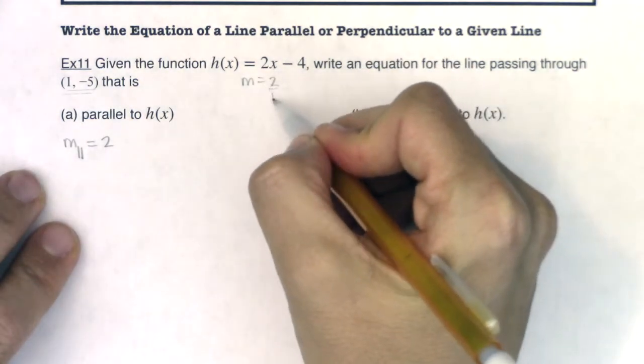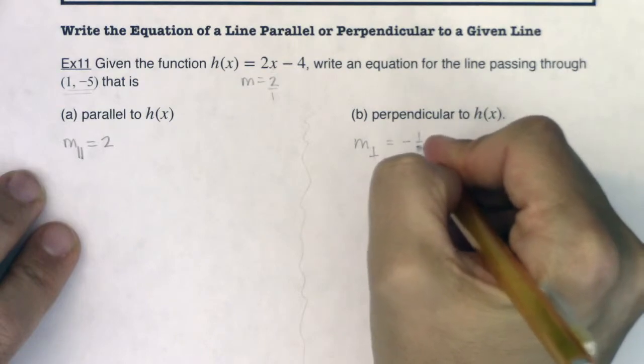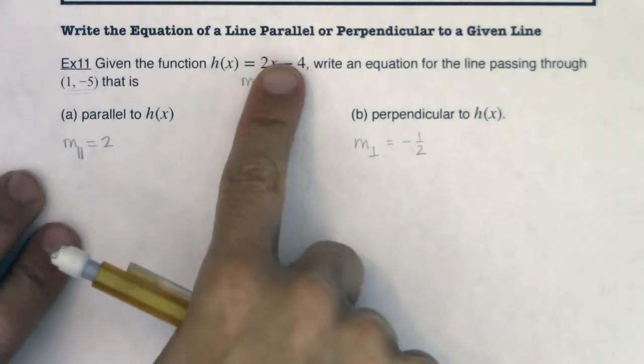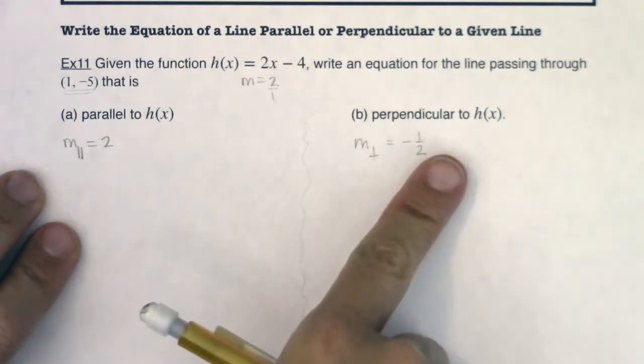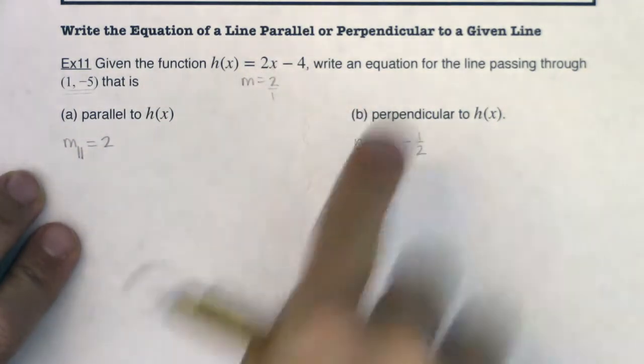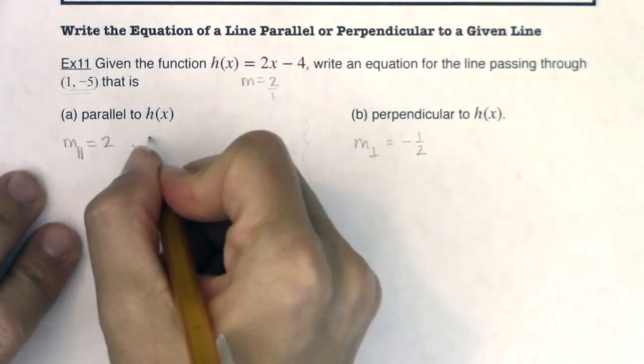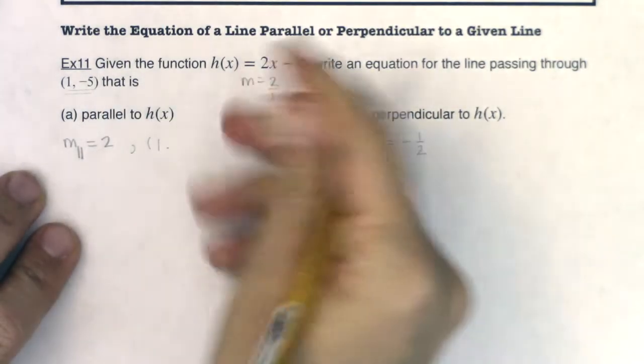Well, this is the fraction 2 over 1, so its reciprocal would be 1 over 2. So all parallel lines will have the same slopes. All perpendicular lines will have slopes that are negative reciprocals to my original slope. Now I'm going to pass through the point (1, -5) on each of these.